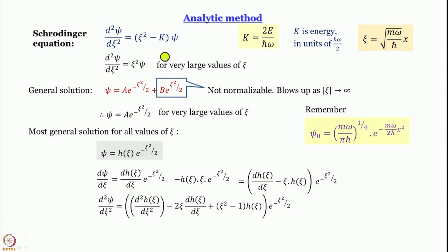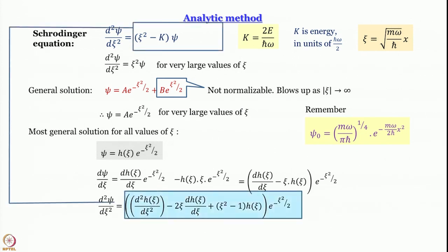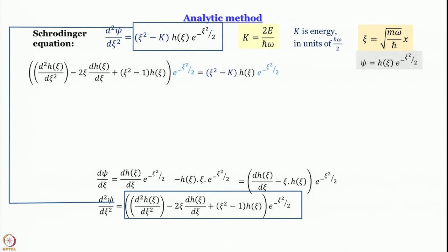We worked out the left-hand side d²ψ/dξ² and obtained an expression for it. The next step is to take that expression and substitute it into the Schrödinger equation. But before doing that, let us rewrite ψ as h(ξ) multiplied by e^(−ξ²/2). Once we have done that, we are ready to put them together.